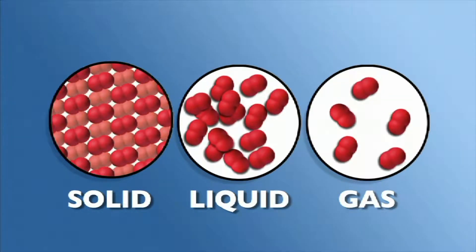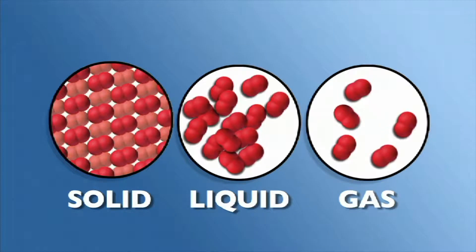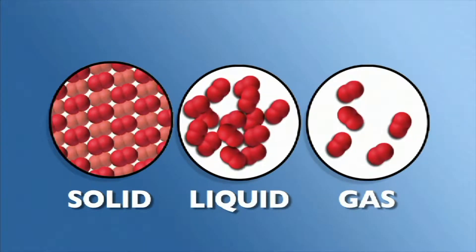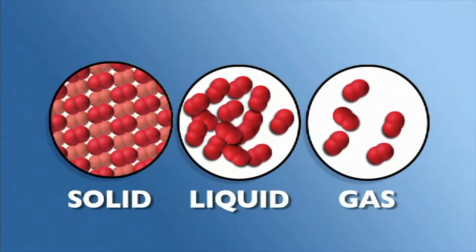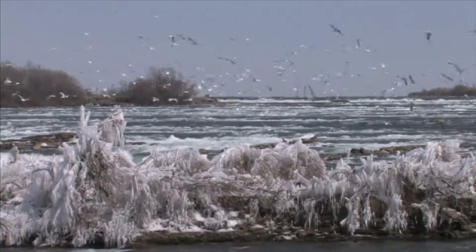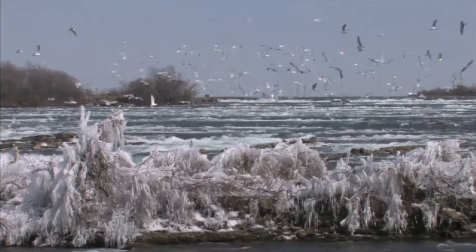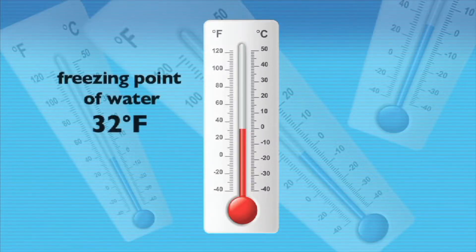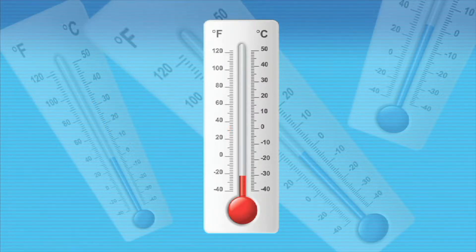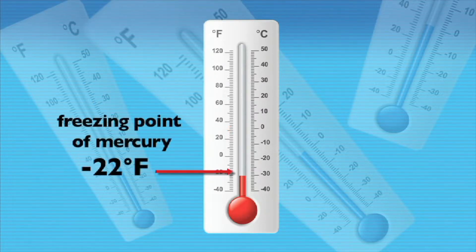Freezing is known as a phase change. It is the process that changes the state of a substance from a liquid to a solid. Freezing is the result of low temperatures. The temperature at which point a liquid becomes a solid is called the freezing point. The freezing point of water is 32 degrees Fahrenheit. The freezing point of mercury is minus 22 degrees Fahrenheit.